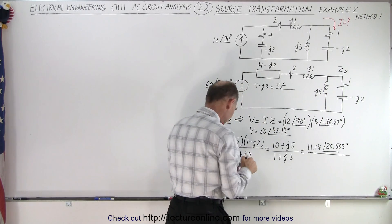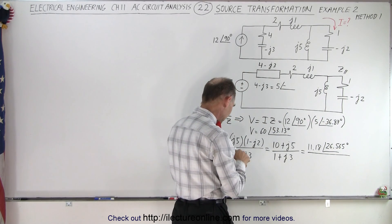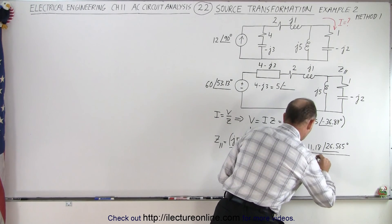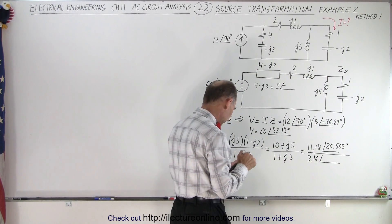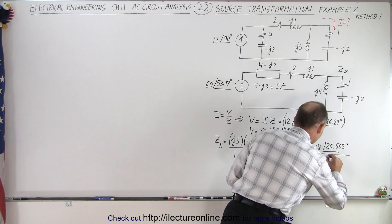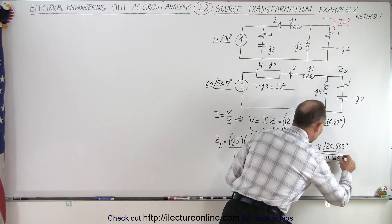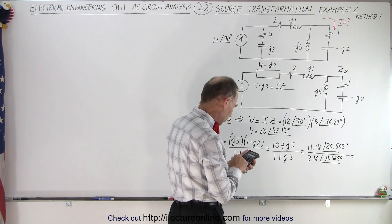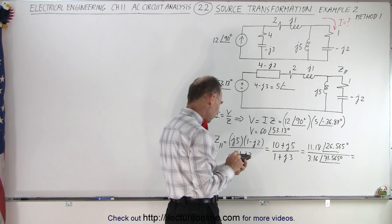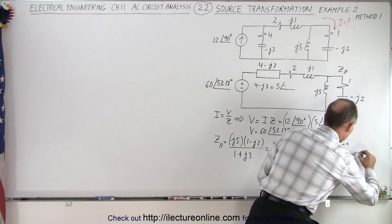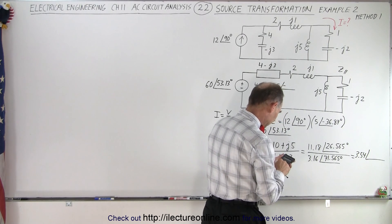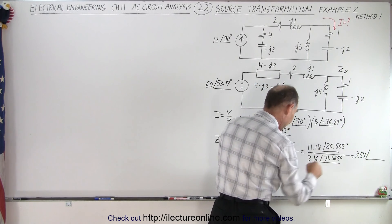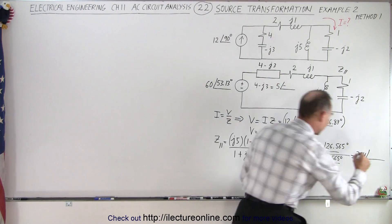The denominator: the square root of 10 is 3.16, with a phase angle of inverse tangent of 3, which is 71.565 degrees. So dividing: 11.18 divided by 3.16 gives us 3.54, with a phase angle of 26.565 minus 71.565, which gives minus 45 degrees.